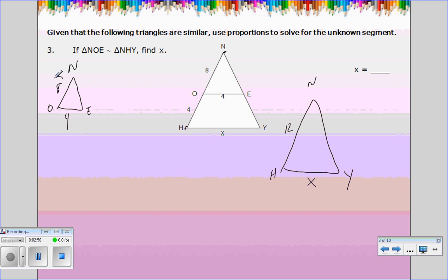So I'm going to pair the 8 with the 12, so 8 goes with 12. So that means 4 goes with X. So 4 goes with X, so cross-multiply, 8 times X and 12 times 4 is 48. Divide both sides by 8, X is 6. So the bottom piece of this triangle is 6.